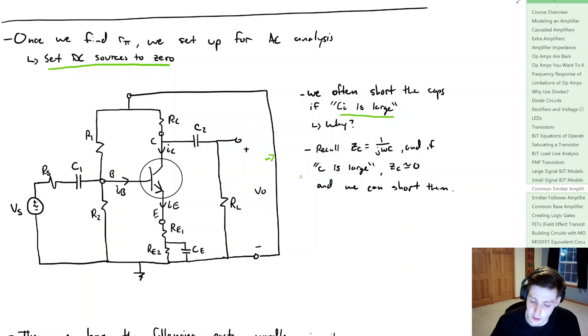Now why is this? Well recall if we look at the impedance per se for the capacitor, we get this one over j omega C term. And if C is large, or the capacitance, and our frequency is quite large, well this impedance is approximately equal to zero, and that's where we get that assumption where we get that short circuit. So if we do that we short C1, we short C2, and then we short CE.